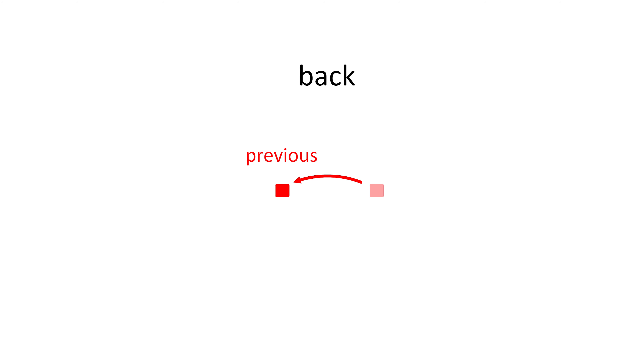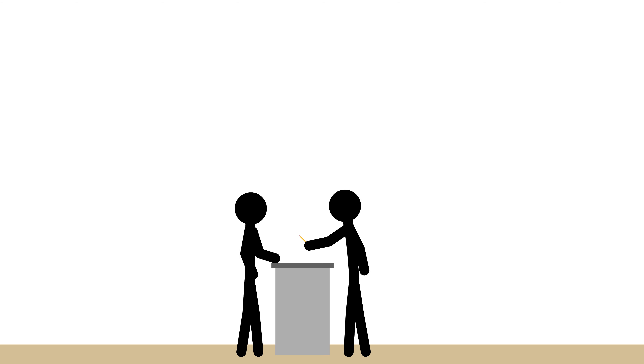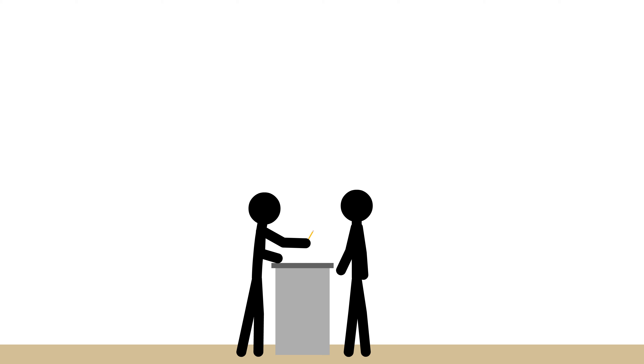Hi everyone and welcome back. Today we're going to take another look at the preposition back and what it can mean when it's used with phrasal verbs. In a previous video, we saw that back can be visualized like this. We can see here that the square moves to its previous position. Therefore, we can think of back as meaning previous. This could refer to things like previous position, previous action, previous time, or any number of previous things. So let's take a look at some examples of phrasal verbs with back in which back means previous.